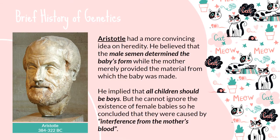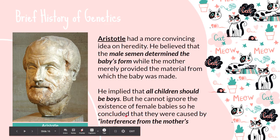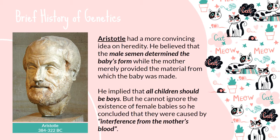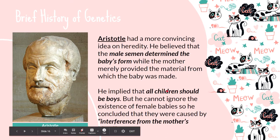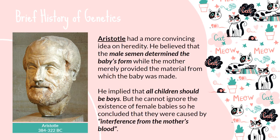Aristotle had another idea on heredity. He believed that the male semen determined the baby's form — that the baby was already contained in the semen — and that the mother merely provided the material or environment for the baby to grow. He also implied that since all babies were found in the male semen, all children should be boys, and that the existence of female babies was caused by interference or disturbance from the mother's blood. However, we know this is not true — the sex of the baby is actually determined by the type of sex chromosome donated by the father into the egg cell.